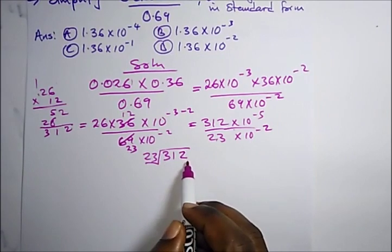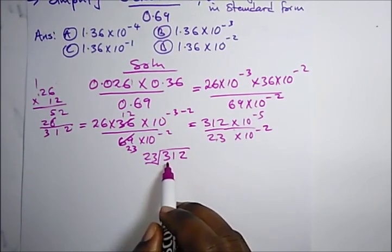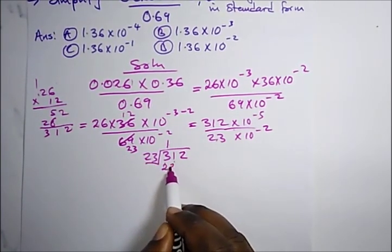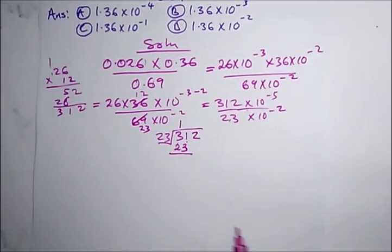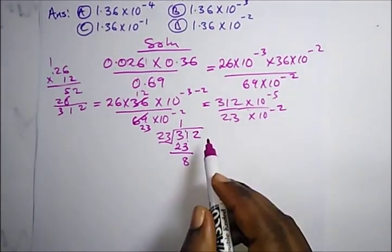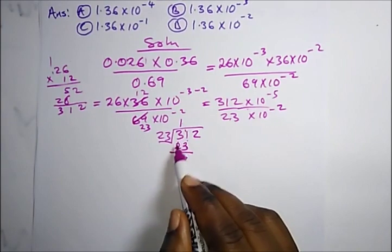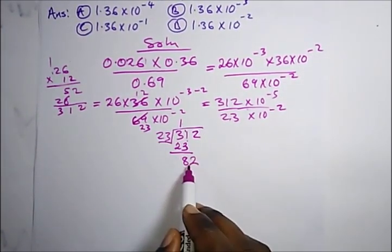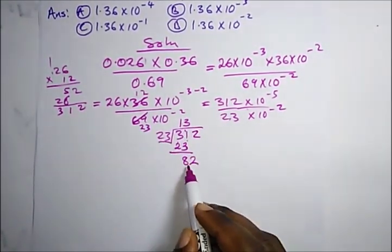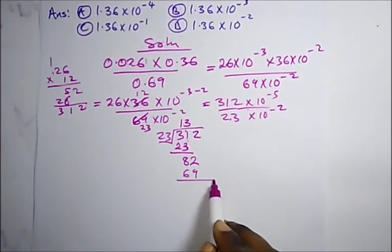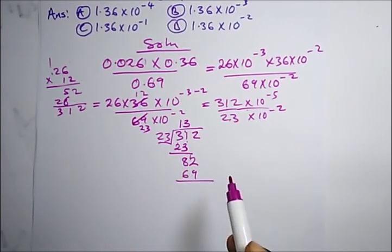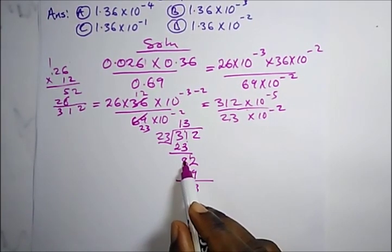How many times does 23 go into 31? Once. One times 23 is 23. Subtract: borrow 1, 11 minus 3 is 8, and 2 minus 2 is 0. Drop down the 2. How many times does 23 go into 82? Three times. Three times 23 is 69. Subtracting: borrow 1, 12 minus 9 is 3, and 7 minus 6 is 1.